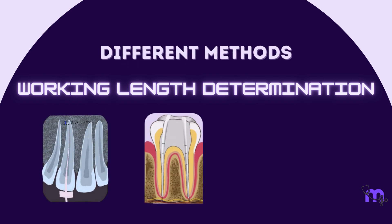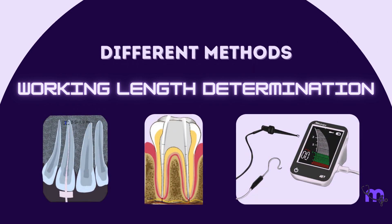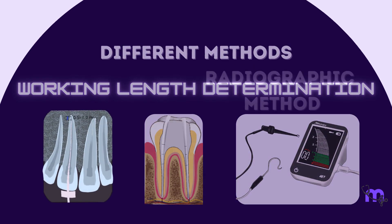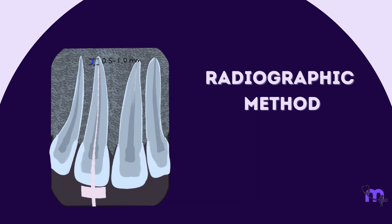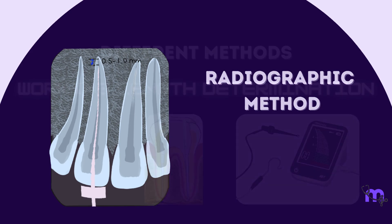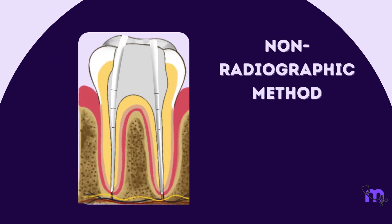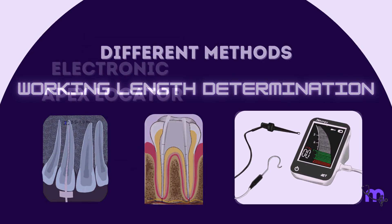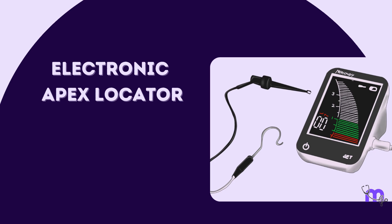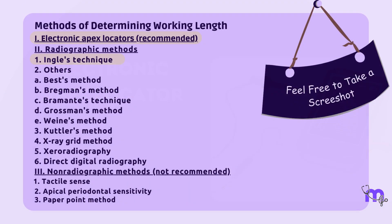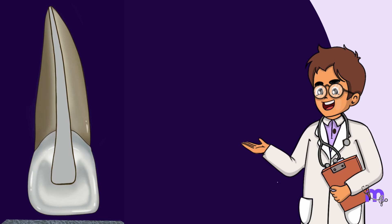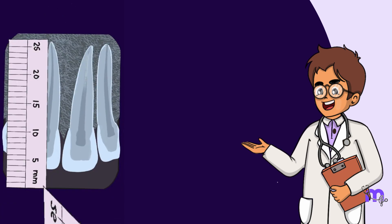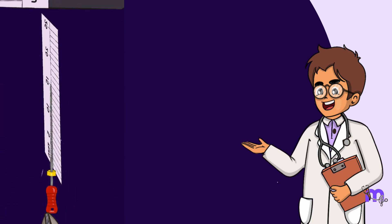With this, let us look at the different methods to determine working length. These can be classified as radiographic methods, non-radiographic methods, and by using electronic apex locators. Today we shall discuss the most common and recommended radiographic method.